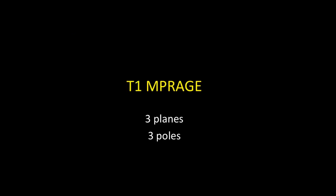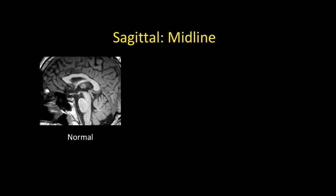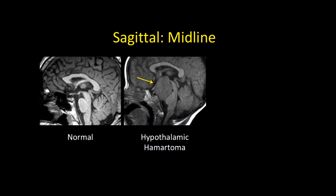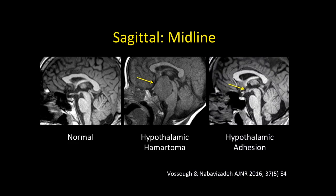Starting with the T1 MP-rage, three planes — sagittal, axial, coronal. On the sagittal midline, you always want to clear that midline. Here's a normal image; here's somebody grossly abnormal with a hypothalamic hamartoma; and here's a more subtle lesion — a hypothalamic adhesion. Hypothalamic adhesions can resemble a small hamartoma but are more almond-shaped, representing an attachment between both sides of the hypothalamus. Some think they're a forme fruste of prosencephaly; others consider them incidental. In my experience, when I see one, I look elsewhere in the brain for additional findings.